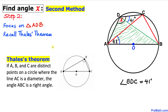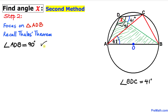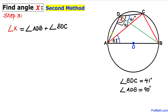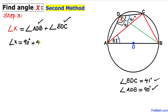Next, let's focus on triangle ADB and apply Thales' theorem once again. According to this theorem, angle ADB is 90 degrees. We can see that the whole angle X equals the sum of angle ADB and angle BDC, so angle X equals 90 degrees plus 41 degrees.